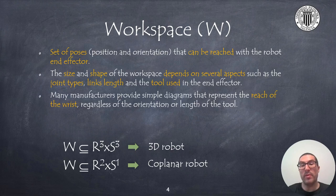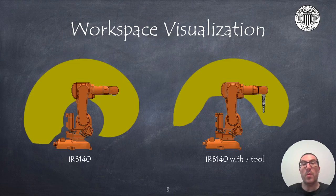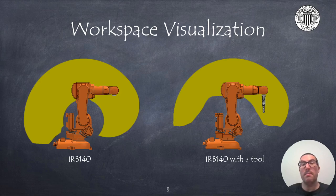In the case of a robot moving in a 3D space, the workspace is always a subspace of R3×S3, while in the case of a coplanar robot, the workspace is always a subspace of R2×S1. Here we show the workspace of the IRB-140 robot. We can see two cases: one without considering the robot's tool and the second one considering the robot's tool. Only positions and orientations that do not cause collisions with the floor or with the robot itself are considered as part of the workspace, also considering the joint limits.